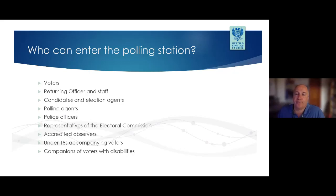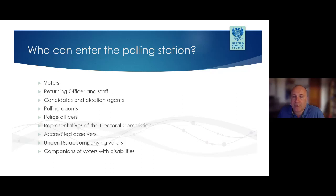Who can enter your polling station? Voters, the returning officer and her staff, candidates and election agents, polling agents, police officers on duty, representatives of the electoral commission, accredited observers, under-18s accompanying voters, and companions of voters with disabilities. Representatives of the media have no right to enter a polling station except as voters or accredited observers, and must not be allowed to film or interview voters in the polling station. Polling station inspectors, the returning officer and the deputy returning officer all have election ID. Observers and electoral commission representatives will have photographic ID issued by the electoral commission. Agents can wear coloured rosettes of a reasonable size, which actually assists electors by making it clear they are activists and not electoral officials.